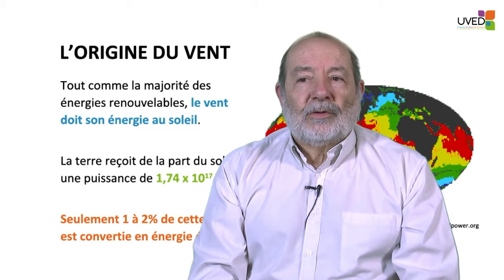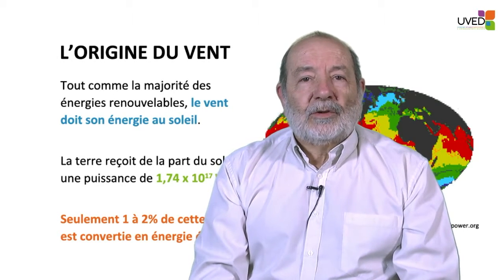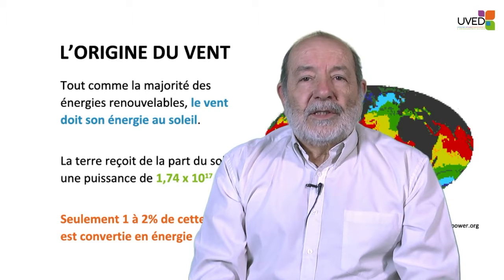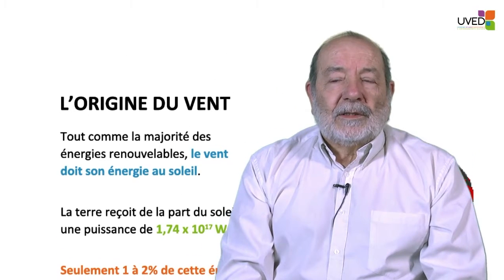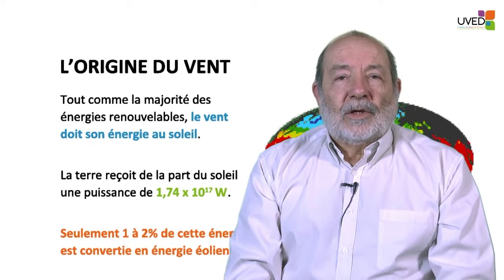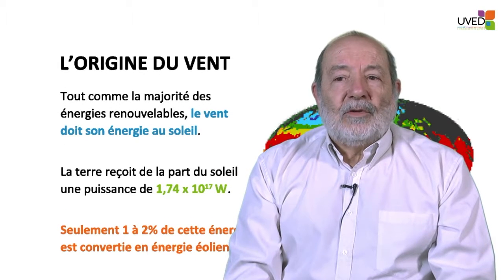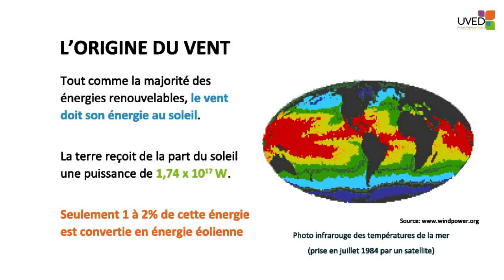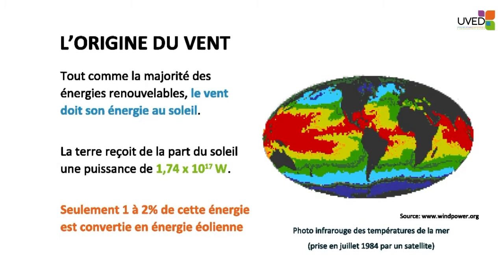Wind owes its energy to the sun, as is the case with most renewable energies. The Earth receives from the sun 10 million billion watts, or 1.7 × 10¹⁷ watts. Only 1 to 2 percent of this is converted into wind energy.